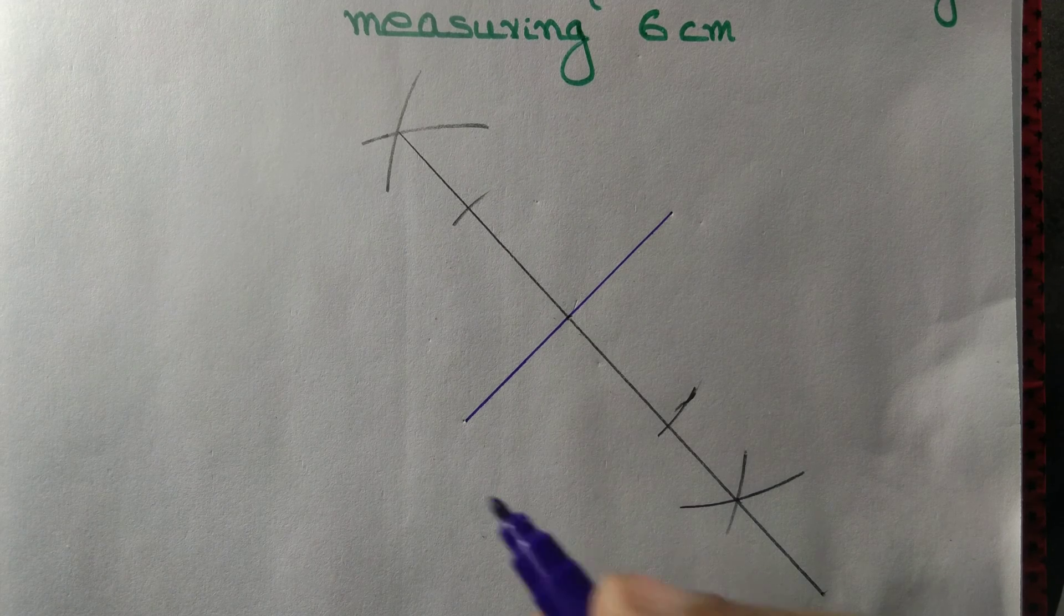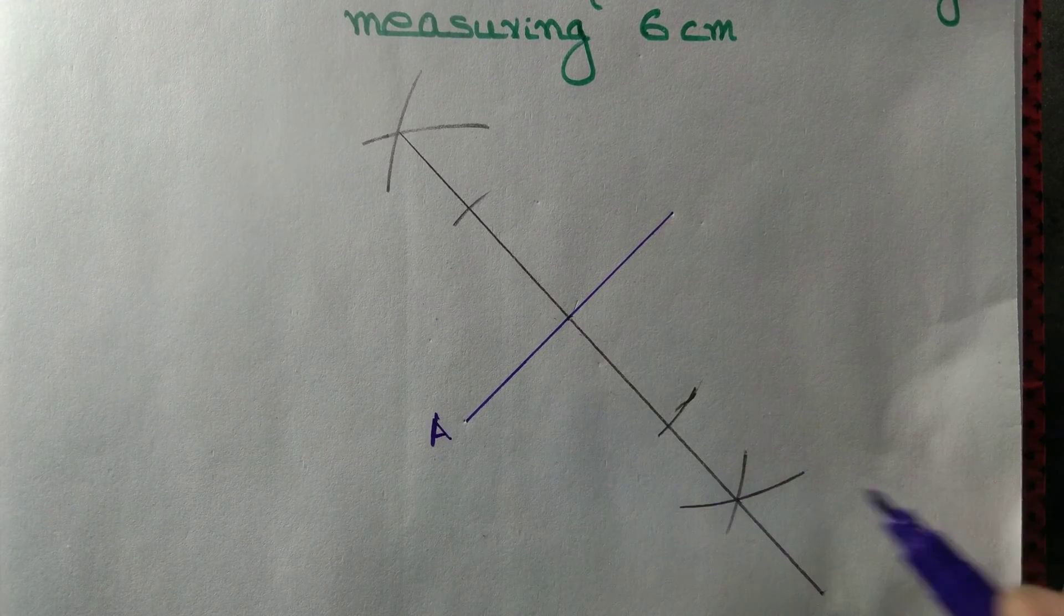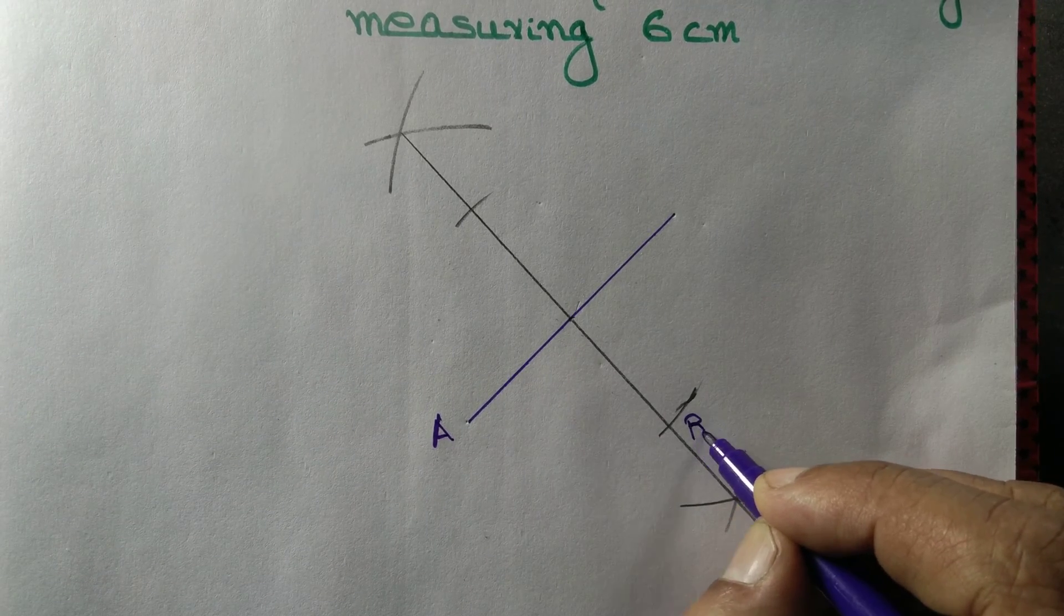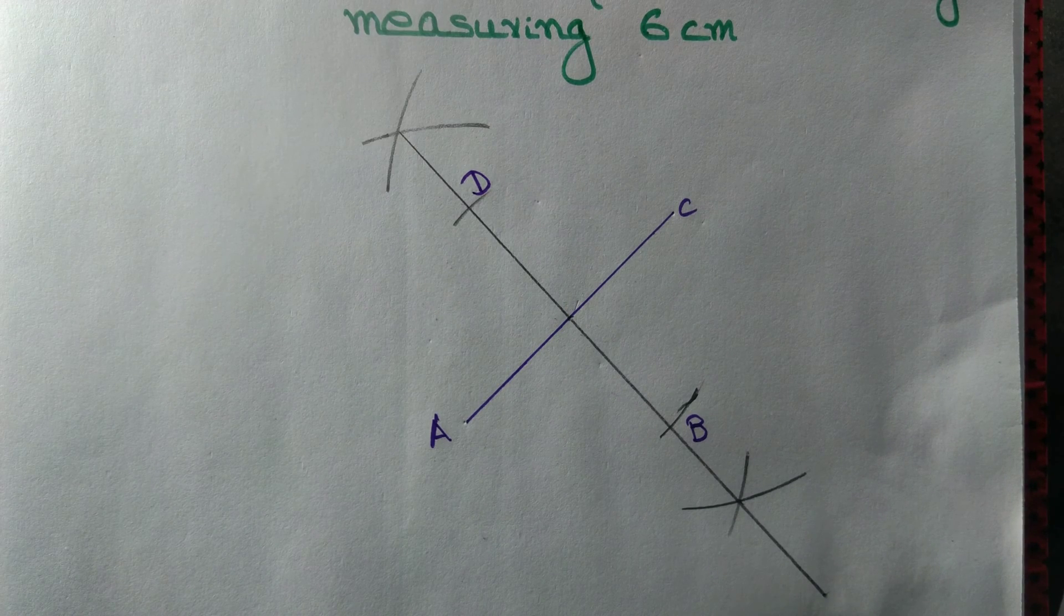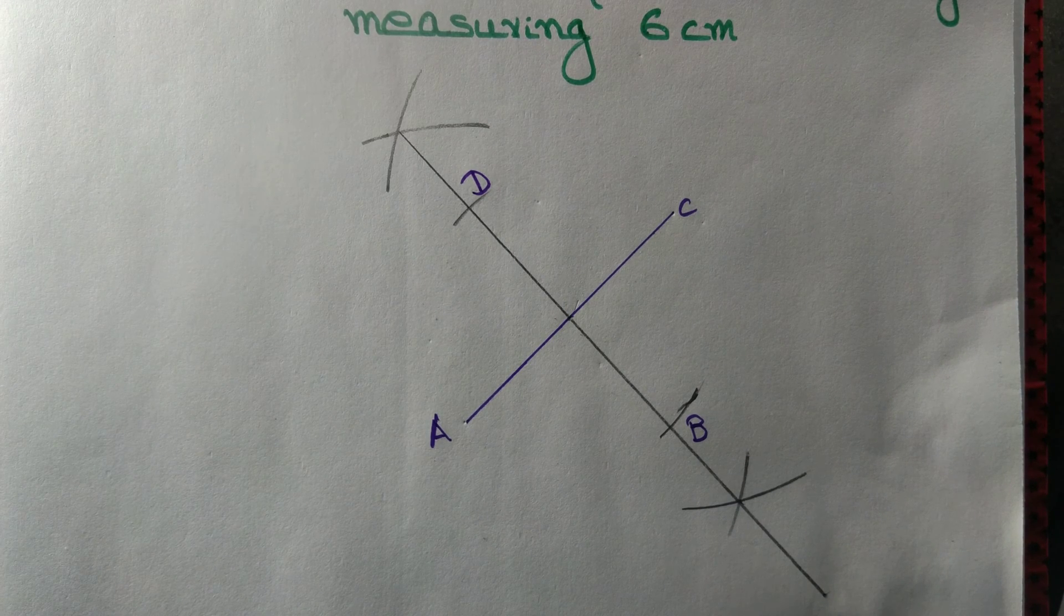Let us label this point A. This is B. This is C. And this is D. So we have a square A, B, C, D.